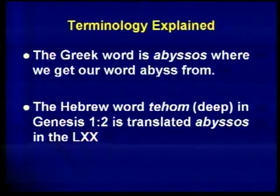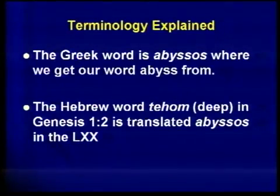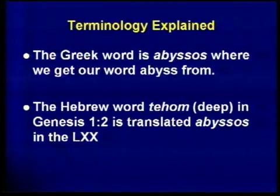It's interesting to notice, going back to the Old Testament in Genesis chapter 1 and verse 2, that the same word is used in a different language. The exact equivalent word to abusos is the Hebrew word tehom, which appears in Genesis chapter 1 and verse 2, where it speaks about 'the deep.' Whenever in the Old Testament you have the word tehom, it is translated into the Greek Septuagint with the word abusos. That's the reason we know that tehom — 'the deep' in Genesis 1:2 — is equivalent in a different language to abusos in Revelation 20:1.